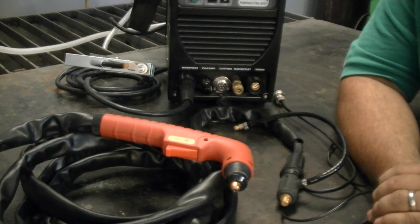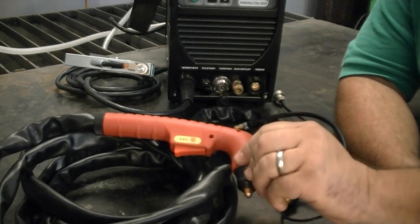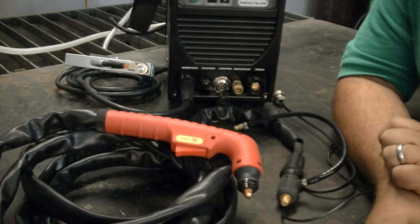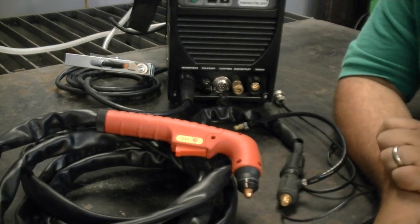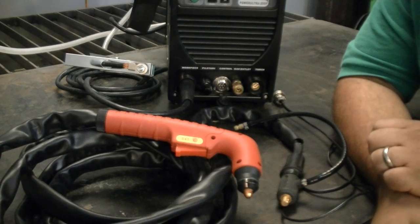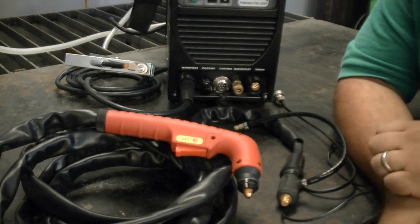For the Power Ultra 205, we use a blowback style torch called the S45. This is a common torch you're going to find on many different units. This is a non-high frequency torch, so you don't have to worry about electronic interference while you're trying to use this torch.